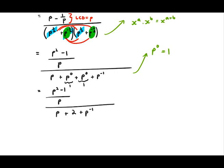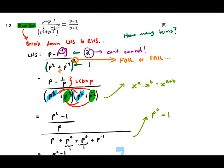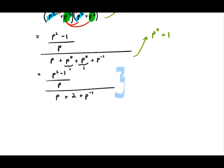Over the denominator we have p plus one plus one plus p to the negative one — so p plus two plus p to the negative one. At this point it might seem like what's in the numerator looks nothing like what's in the denominator, but just keep following your laws of rational exponents and see where you end up.